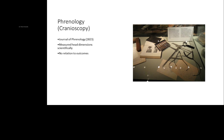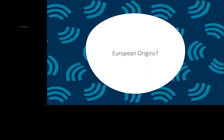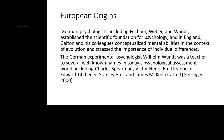Along came Darwin, who challenged the current scientific ethos with his Origin of Species. A colleague of his was Galton, who was looking at the link between heredity and intellectual functioning. There were origins in Europe among German psychologists, including Fechner, Weber, and Wilhelm Wundt, who created the scientific foundation for psychology.